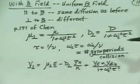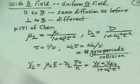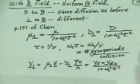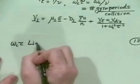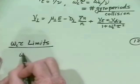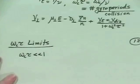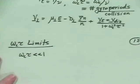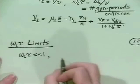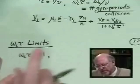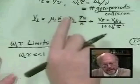The critical parameter governing diffusion in a magnetic field is omega_c * tau. Let's consider two limits. When omega_c * tau is much less than one, that means very few gyro periods per collision. A particle barely completes any gyro motion before colliding.